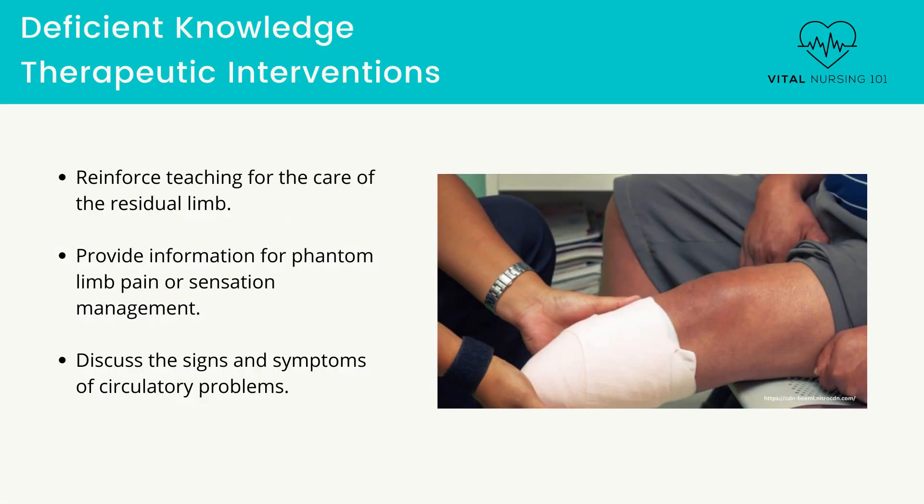Therapeutic interventions — now let's go over therapeutic actions of the nurse. Reinforce teaching for the care of the residual limb, such as wrapping the residual limb, skin care, and weight-bearing limitations. Accurate self-care measures promote optimal rehabilitation. The patient may need to continue wrapping the residual limb to promote the effective shaping and successful fit of the prosthesis.